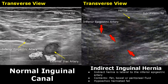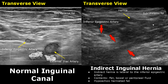Here is another transverse view of a normal inguinal canal with color Doppler applied. This right here is the inferior epigastric artery, and this is the external iliac artery. An indirect hernia is much more common than a direct hernia. In a transverse view, an indirect hernia is seen lateral to the inferior epigastric artery. Here is the neck of the hernia.